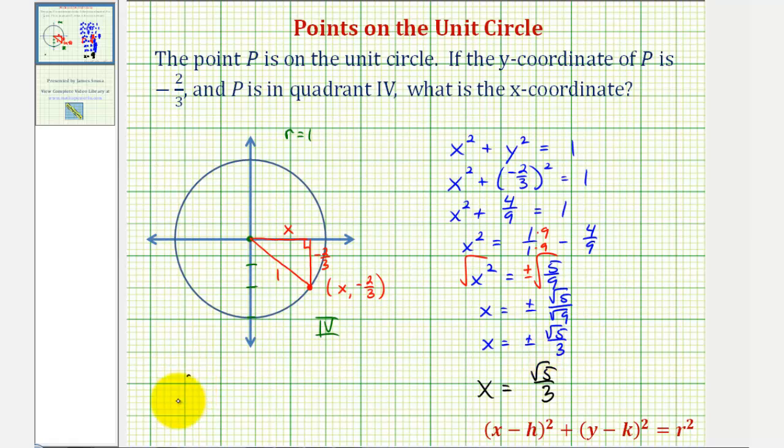So the point would have coordinates square root of five divided by three, comma, negative two-thirds.